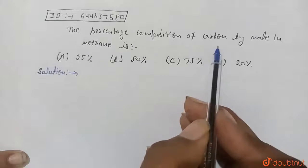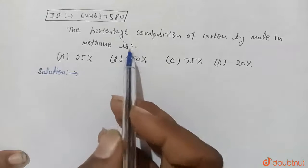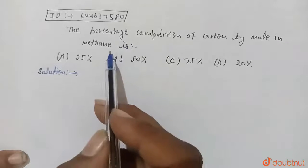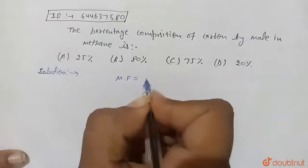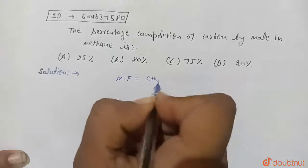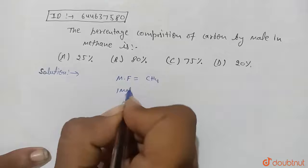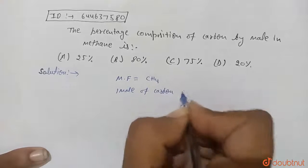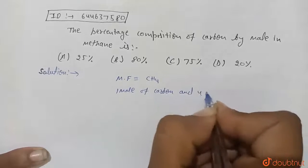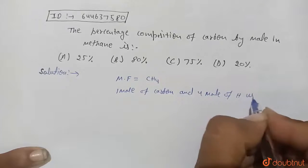You need to find the percentage composition of carbon in methane. The molecular formula of methane is CH4. Now here, one mole of carbon and four mole of hydrogen are used for formation of CH4.